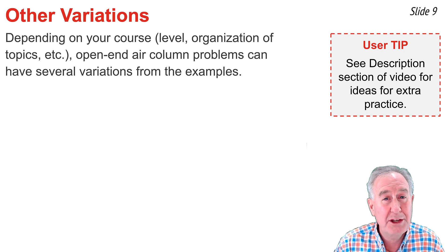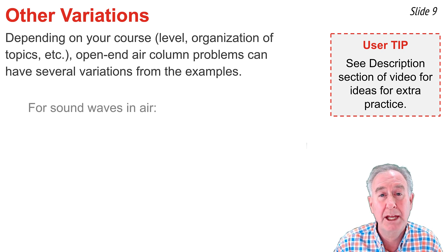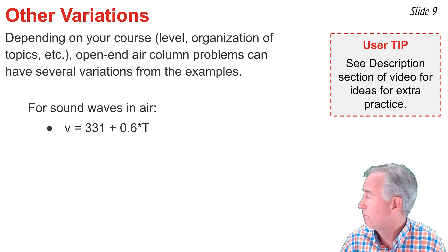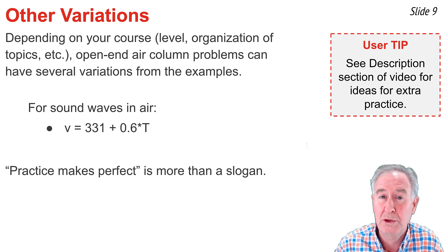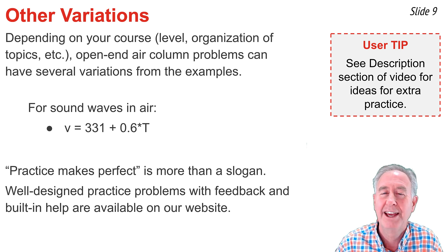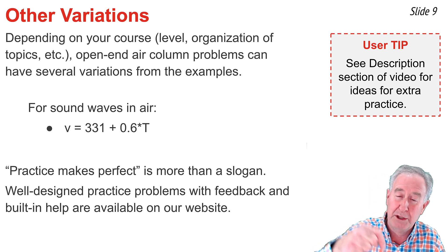We've seen five examples, each of a different variety. There are likely other variations, and the most likely one may involve calculating the speed of sound given the temperature of air, using an equation that calculates speed from temperature in degrees Celsius. Practice makes perfect, and on our website you'll find a collection of well-designed problems that give immediate feedback, opportunities to correct mistakes, and links to helpful audio files describing how to approach each problem — it's called the Calculator Pad, and I've left a link in the description.